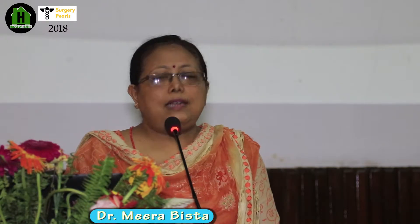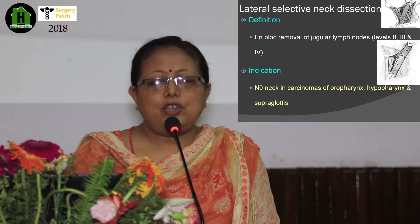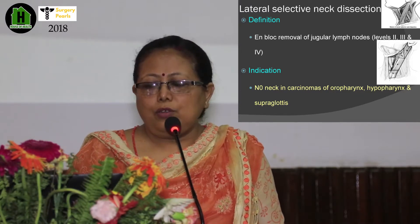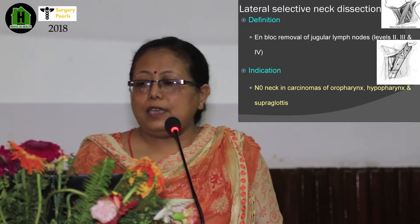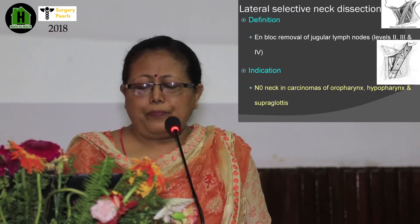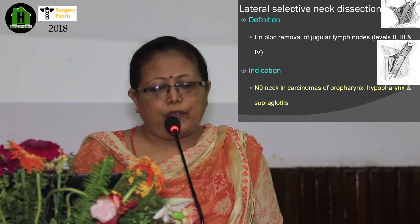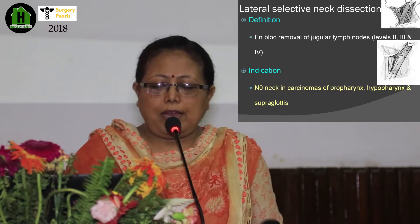Lateral selective neck dissection covers levels 2, 3, and 4 — the jugular chain nodes just below the sternocleidomastoid muscle, around the internal jugular vein. Indications are N0 neck nodes in carcinoma of the oropharynx, hypopharynx, and supraglottic carcinomas, as lymph nodes drain to the lateral group.